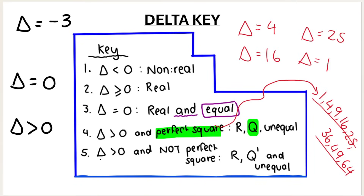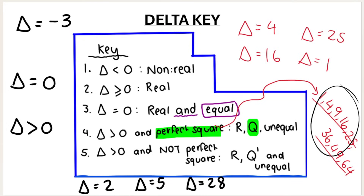Then we get delta is bigger than zero and not a perfect square. So for example, delta could give you two, or five, or twenty-eight — anything that is not a perfect square — then your roots are irrational. So: perfect square means rational, not a perfect square means irrational.